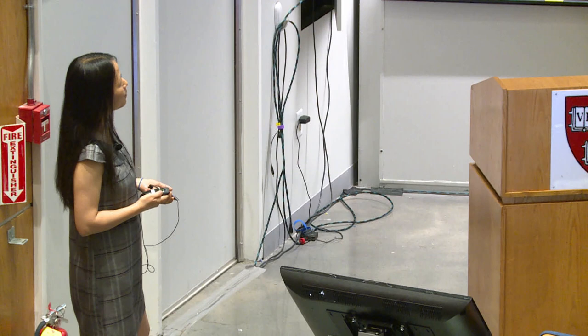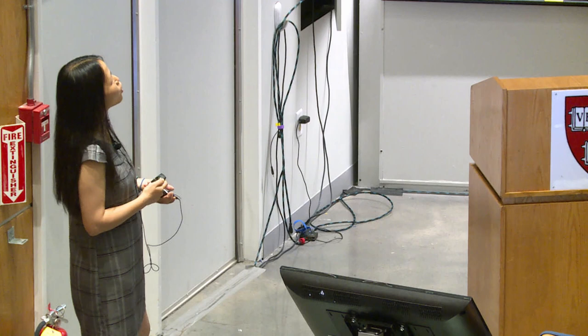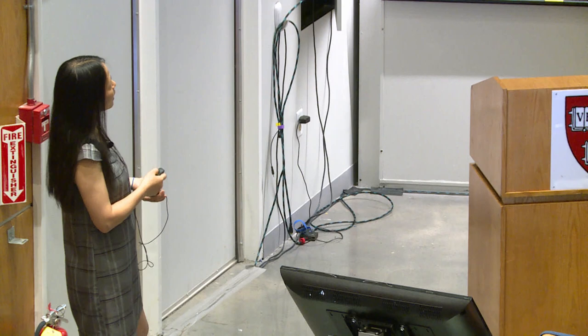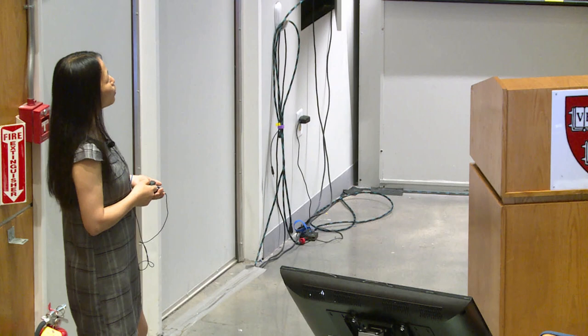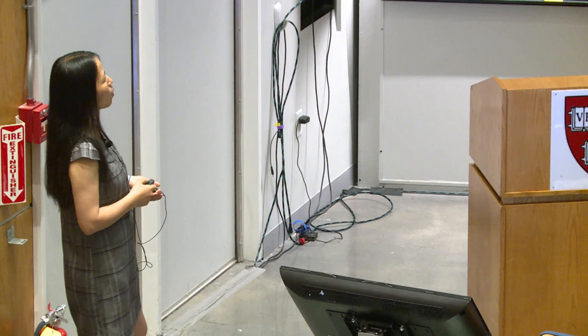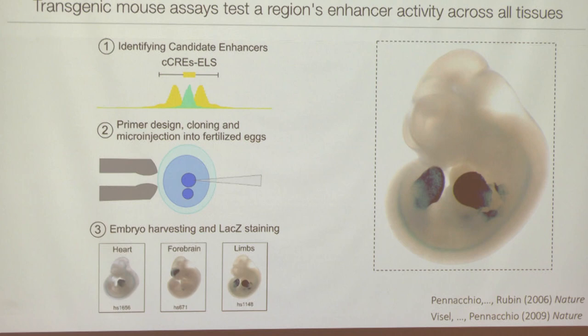We also have internal validation data from Len Pennacchio's lab using transgenic mouse assays — lower throughput but very accurate. You take a mouse embryo, inject a piece of DNA presumed to be a regulatory element with a reporter gene, and where you see blue staining indicates where that piece of DNA has a regulatory function. Here it indicates the heart, the forebrain, and the limbs. We have validated roughly 100 CCREs, and the higher the signal, the higher the validation rate.